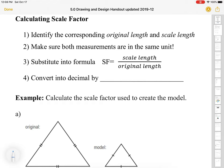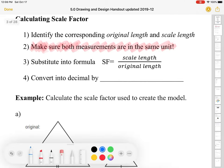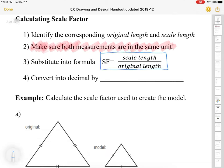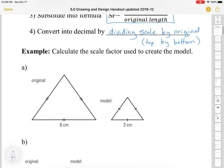Calculating scale factor. So first we identify the corresponding original and scale length. We make sure we know which one's original and which one's scale. We have to make sure both measurements are in the same unit, because this is a scale factor. So you might have to do some conversions.